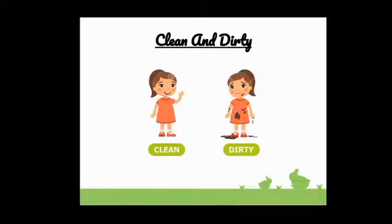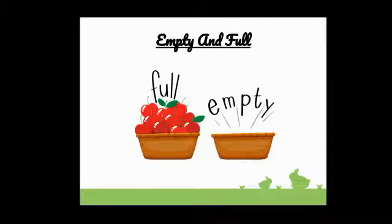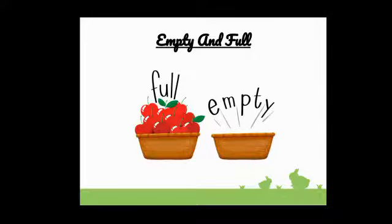Now I will show the next picture. Wow! Lots of cherries — yummy cherries. So you can see in this picture two baskets. One is full with delicious cherries, yummy cherries, and the other is empty. There are many cherries in red color in one basket, and in the other basket there is nothing — it is empty.